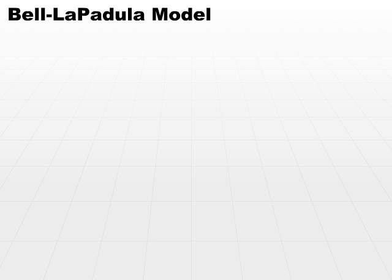Let's take a look at some of the transitions defined in the Bell-LaPadula model. They're defined as properties. There are three total properties we're going to look at, starting with the simple security property.